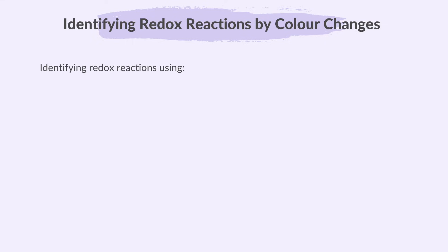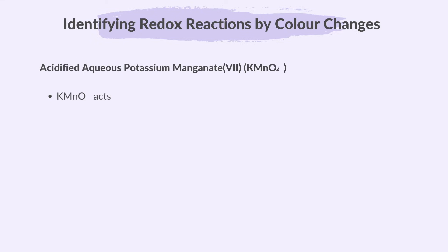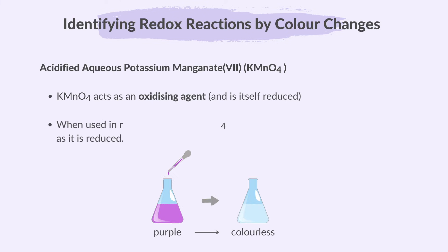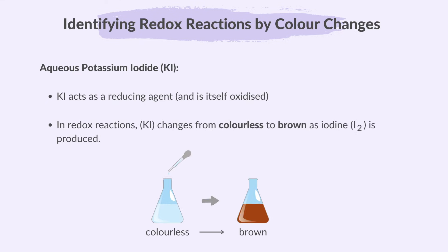Finally, we'll explore how colour changes can help us identify redox reactions using acidified aqueous potassium manganate and aqueous potassium iodide. Potassium manganate acts as an oxidizing agent and is itself reduced — when used in redox reactions, it changes from purple to colourless as it is reduced. Potassium iodide acts as a reducing agent and is itself oxidized — in redox reactions, it changes from colourless to brown as iodine is produced.